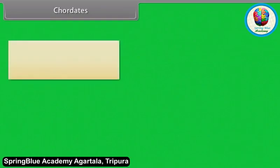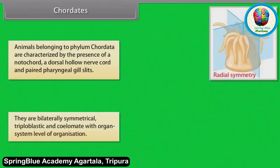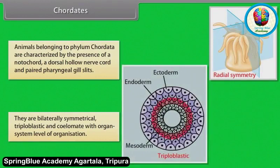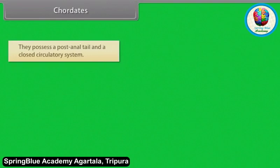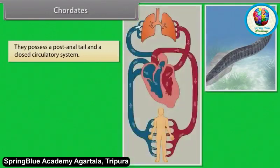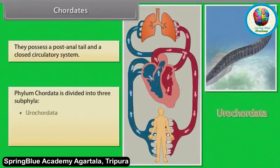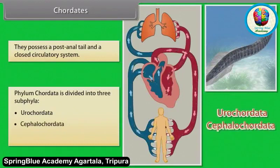Animals belonging to phylum Chordata are characterized by the presence of notochord, a dorsal hollow nerve cord and paired pharyngeal gill slits. They are bilaterally symmetrical, triploblastic and coelomate with organ system level of organization. They possess a post-anal tail and a closed circulatory system. Phylum Chordata is divided into three subphyla: Urochordata, Cephalochordata, Vertebrata.